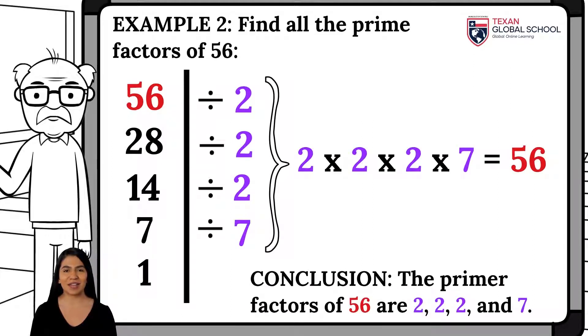Finally, since 7 is a prime number, we divide it by itself. Thus, we conclude that the prime factors of 56 are 2, 2, 2, and 7, since their product results in 56.